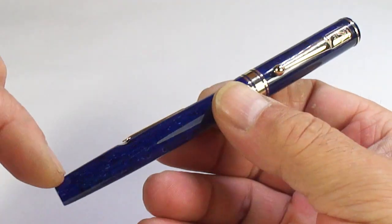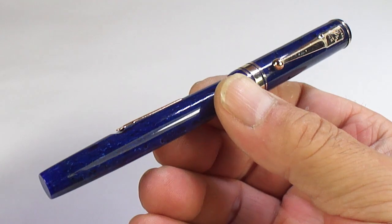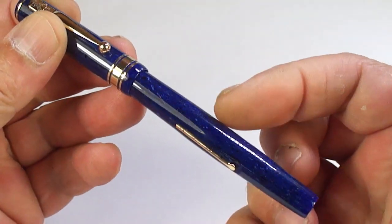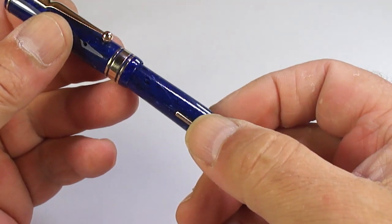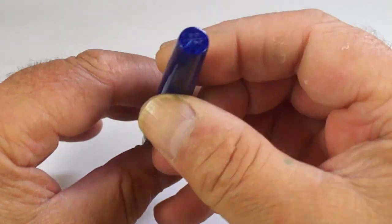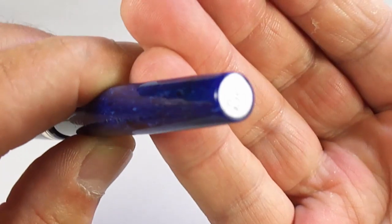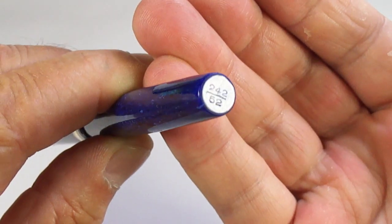The size of it from the top of the cap to the bottom of the barrel is around about 133 millimeters capped. The diameter of the barrel is approximately around about 11 millimeters in diameter. Now one of the other imprints that it has, if we show you the end of the barrel there, you'll see the model number.